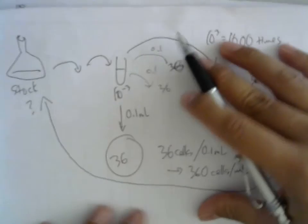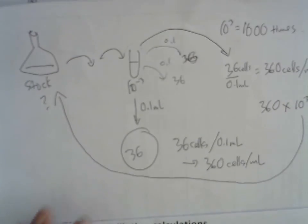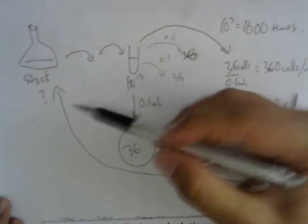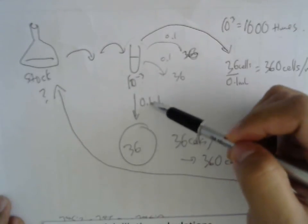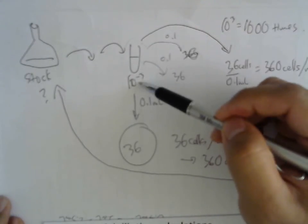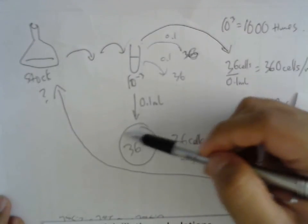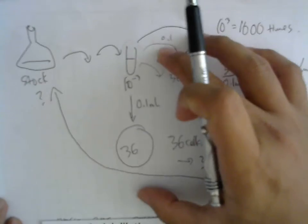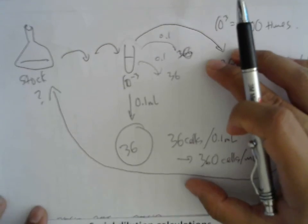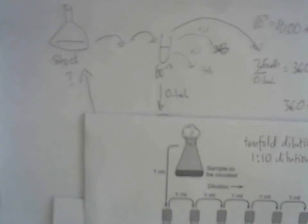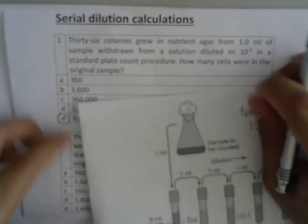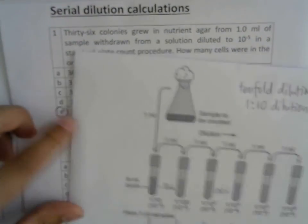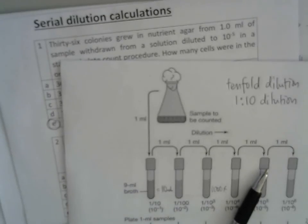Questions will always manipulate these numbers — the colony count, the dilution fold, the ratio, and the volume plated. Don't be afraid; just draw everything you know. If you have any more problems with serial dilution questions, you can come and see me. Thank you very much.